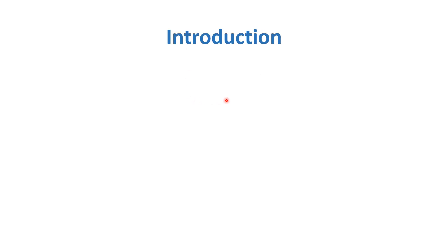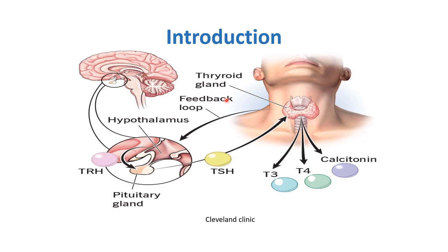In order to understand the thyroid gland, we are going to observe a diagram. The thyroid gland is labeled in the neck region, and there are three hormones produced: T3, T4, and calcitonin.